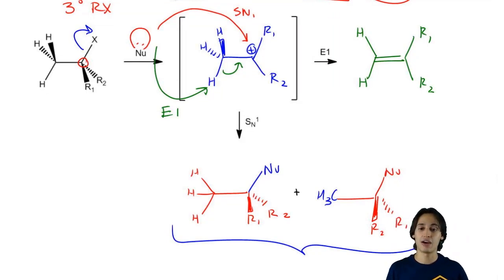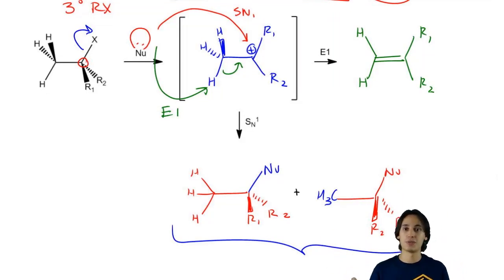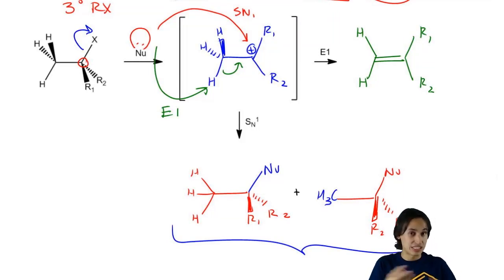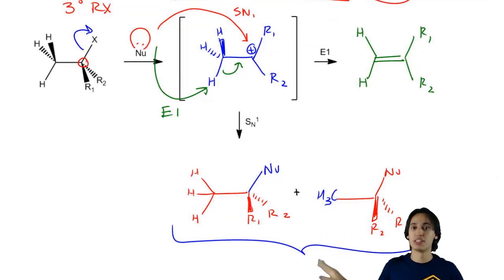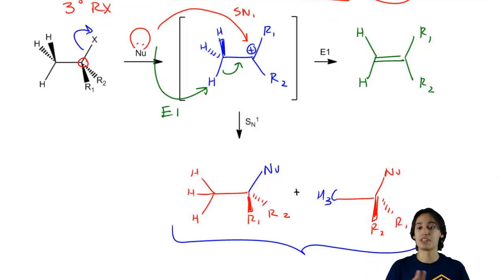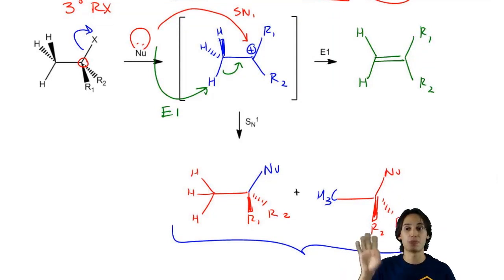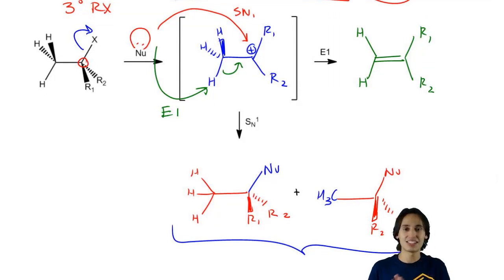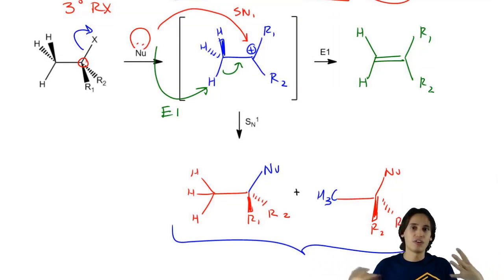So we would not only have two different substitution products because of the racemic part, but we would also have an elimination product as well. On top of that, remember that elimination products may yield several products. In this case I only drew one set of beta hydrogens, but if I had more beta hydrogens I could react with all of those. So one of the reasons this is so messy is because you have the possibility for up to five different products — sometimes two different substitutions and three different eliminations depending on what your leaving group looks like.